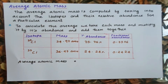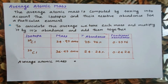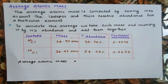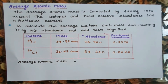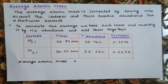The next topic is the average atomic mass. What is the average atomic mass? Isotopes are atoms of the same element — they have the same atomic number — but a different mass number.